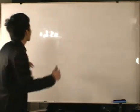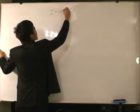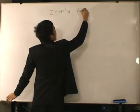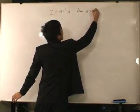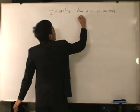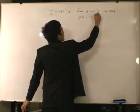So what is a complex number? A complex number, we define it as this. Z equals A plus Bi, where A and B are real, and i equals square root of minus one.